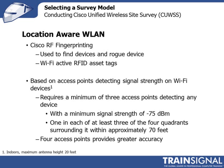The next survey model is the location-aware wireless LAN. Cisco uses a technology called RF fingerprinting, which collects information from devices such as RFID tags and rogue devices like rogue access points and rogue clients. It takes that information received from multiple access points and analyzes it on a network-based server referred to as an appliance.